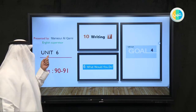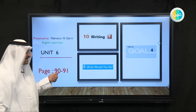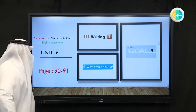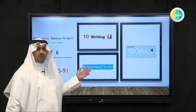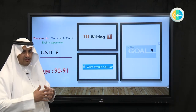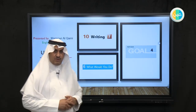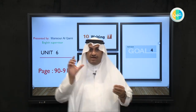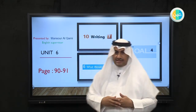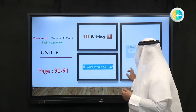We have Unit 6 today. I want you all to please open your books on pages 90 and 91. We are talking about 'What Would You Do,' which is Unit 6. Today we are talking about writing skills — how can you improve your writing, how can you write, how can you narrate, how can you build sentences in English? It's simple and easy. Just follow me and watch what we are going to do.